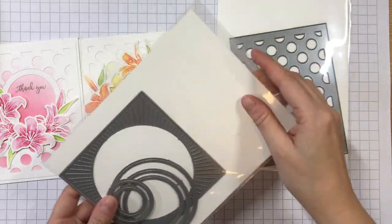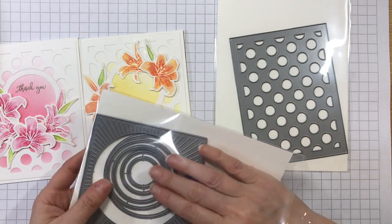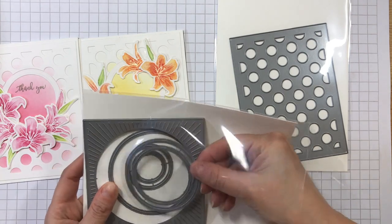You can do this with any cover die in any shape for the aperture, so long as you can create a frame. Any nesting dies you have will be perfect for this technique.